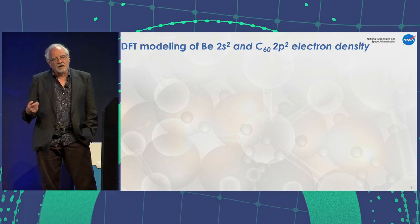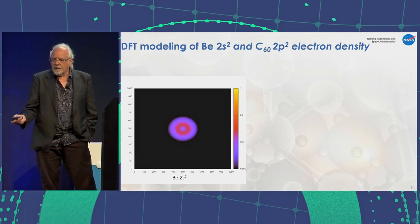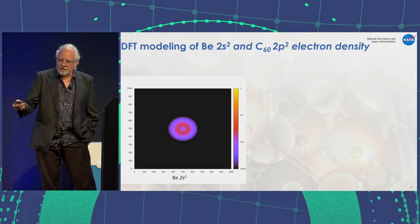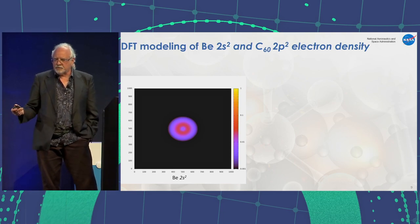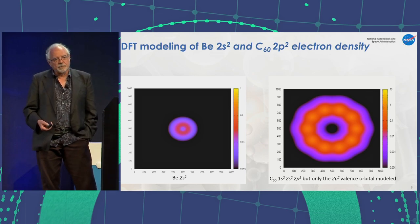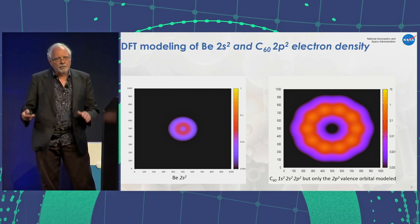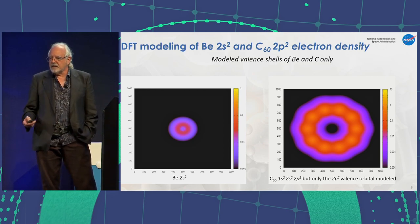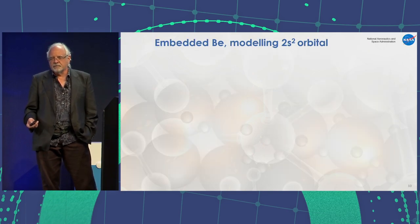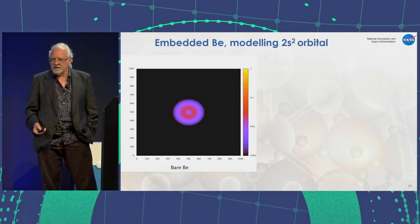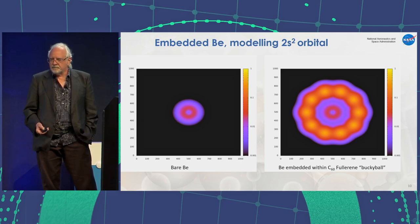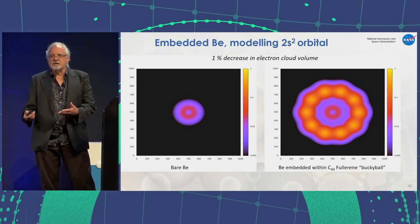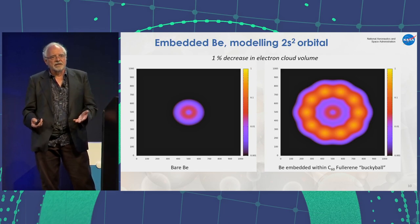I'll show some modeling we've done of the beryllium valence and the carbon-60 buckyball valence. On the right-hand side is the electron density—you can see it's smeared out over a region; this is just looking at the beryllium 2S2. The same thing looking at a buckyball, where we look at a cross-section in the XY plane—both of these are symmetric throughout the volume they occupy. We're only modeling the beryllium and the carbon. Now I'm going to embed the beryllium, modeling the 2S2 orbital—the outer valence electrons—inside of a buckyball. What I find is a 1% decrease in the electron cloud volume, which is consistent with the compression that experimentally gives rise to a 0.8% reduction.